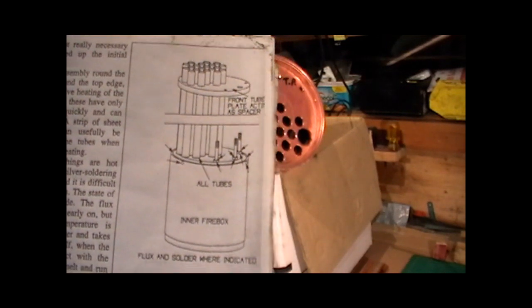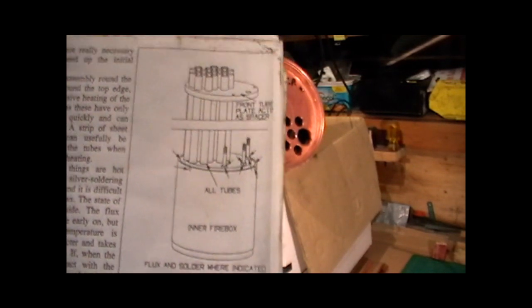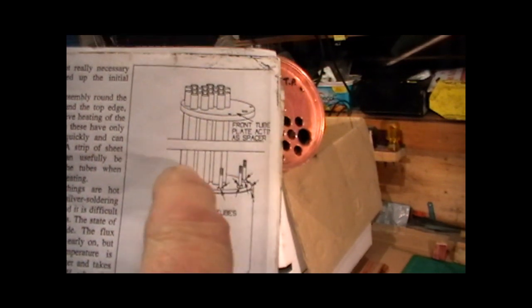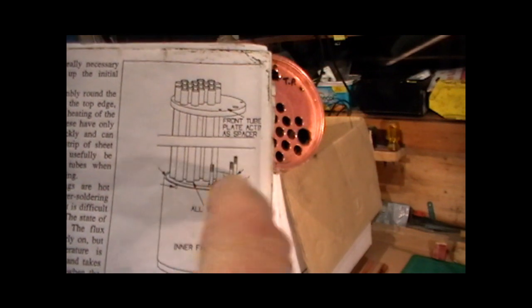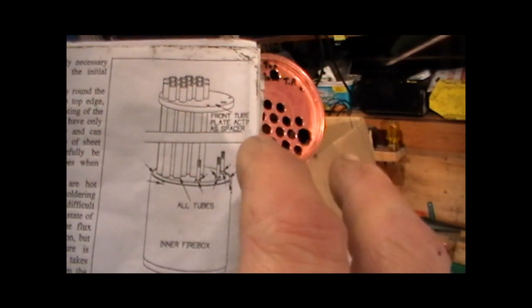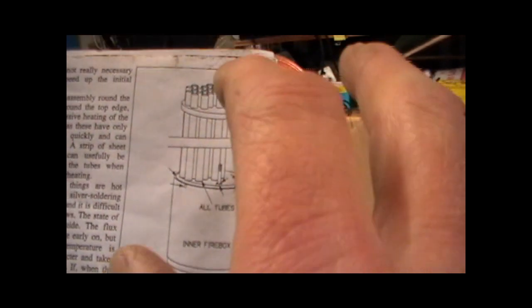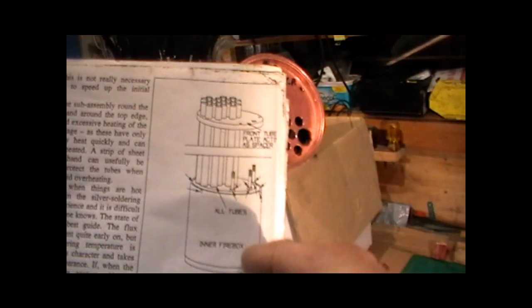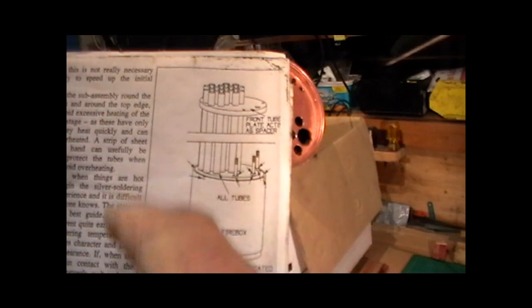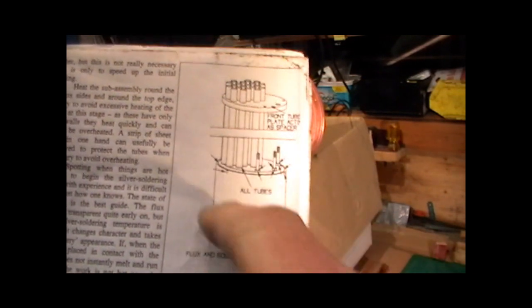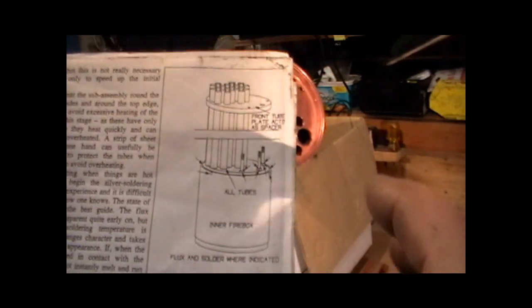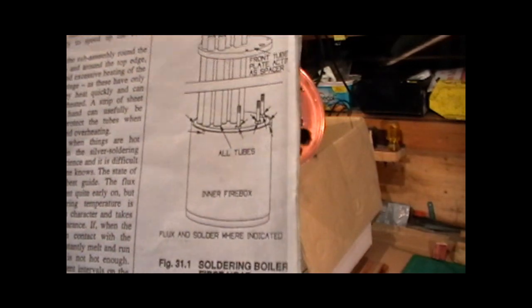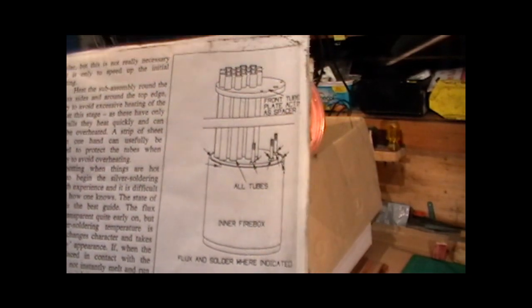My next stage will be to solder it up to that configuration. Then it'll have to be re-inspected by the inspectors so they can determine that I've got full penetration on all my internal solder joints before the outer tubes go on. So I'm given the go-ahead to go to that silver soldering stage, then re-inspect, and then once that's passed, I will be able then to put all the outer tubes on and all the fittings and finish the boiler off.